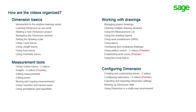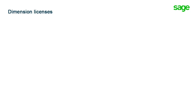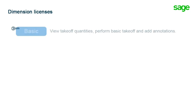Notice that some of the lessons show Premier in their title. Dimension comes in three product editions: Basic, Advanced, and Premier. The Basic edition is provided at no cost, and it allows a wider stakeholder audience to view your plans and make simple annotations without purchasing an expensive license. You can perform individual takeoff measurements to see quantities, but the Basic edition doesn't store those measurements or associate them with the project.